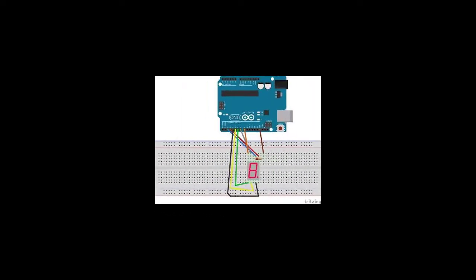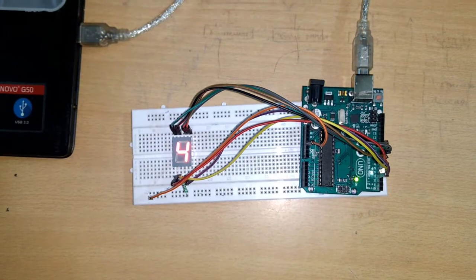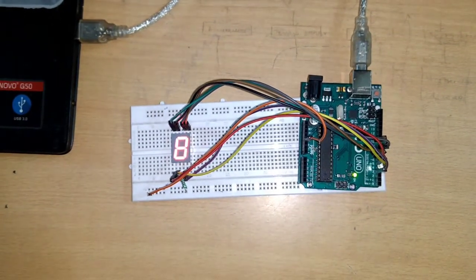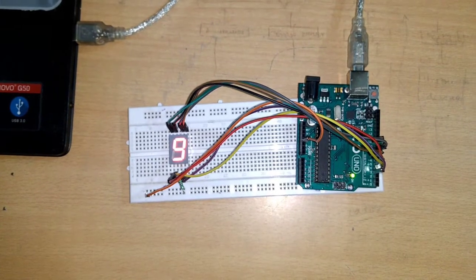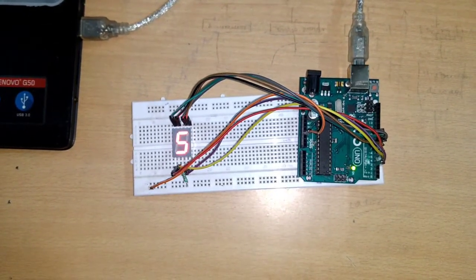Hello everyone, this is Subham from MySargetCrux and in this video we are going to interface a 7-segment display with Arduino and display digits from 0 to 9 in ascending order and then from 9 to 0 in descending order simultaneously. So let's get started.